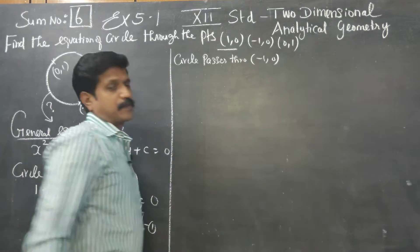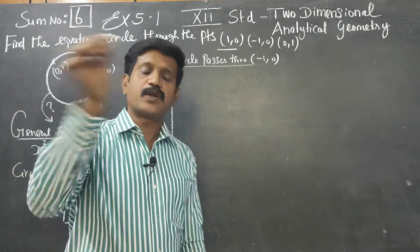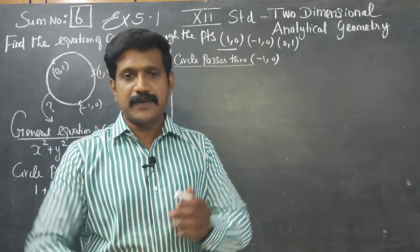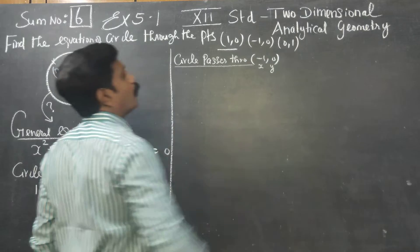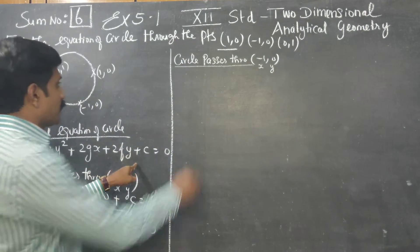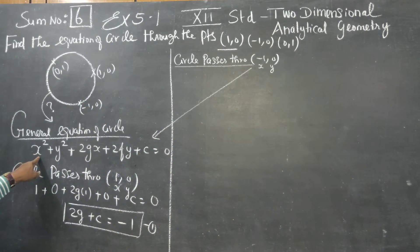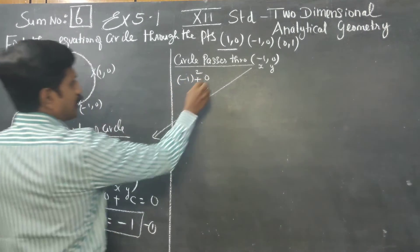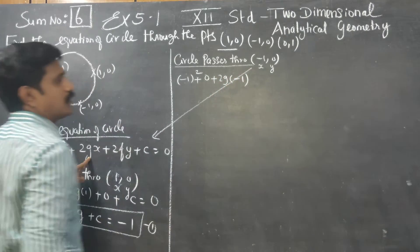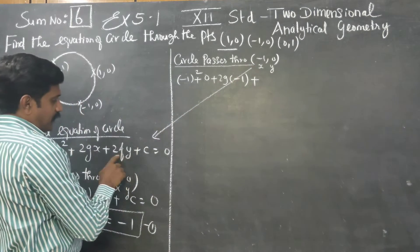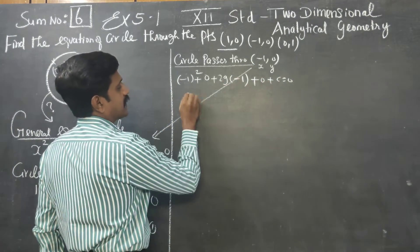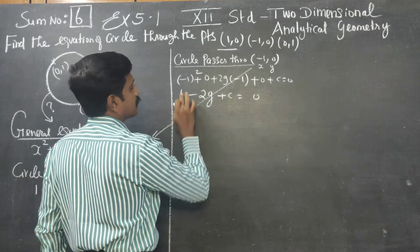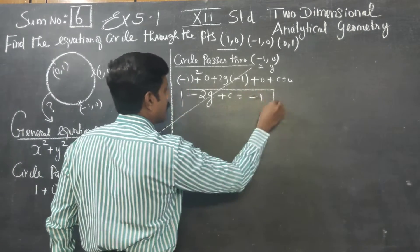Next, the circle passes through (-1,0). Since the circle passes through a point, the equation must be satisfied. Substituting x = -1 and y = 0 into the general equation: (-1) squared plus 0 plus 2g(-1) plus 2f(0) plus c equals 0, giving minus 2g plus c equals minus 1. This is equation number 2.